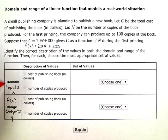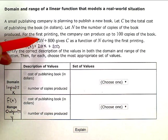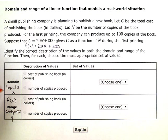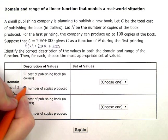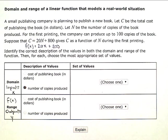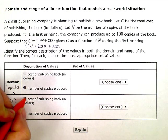So if N is the X's or the inputs, then the number of copies produced is the domain. And if C is the function value or the output, then the cost of publishing the book is the range.